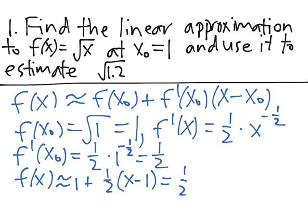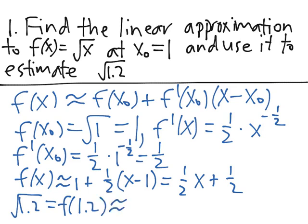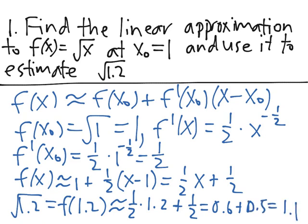Simplifying, f(x) ≈ 1/2 · x + 1/2. Now, to estimate √1.2, we compute f(1.2) ≈ 1/2 · 1.2 + 1/2 = 0.6 + 0.5 = 1.1. So 1.1 is our approximation.